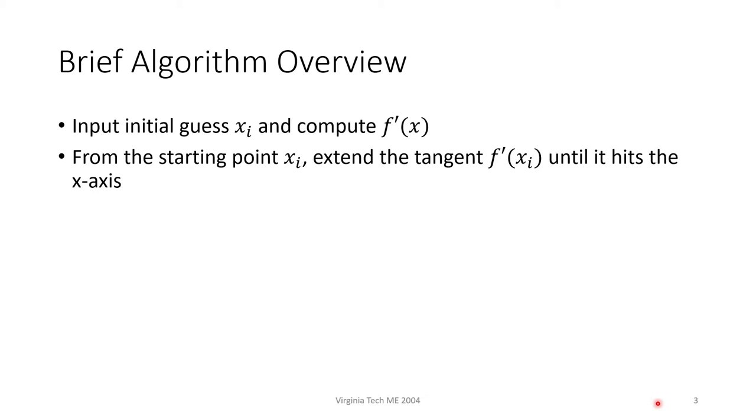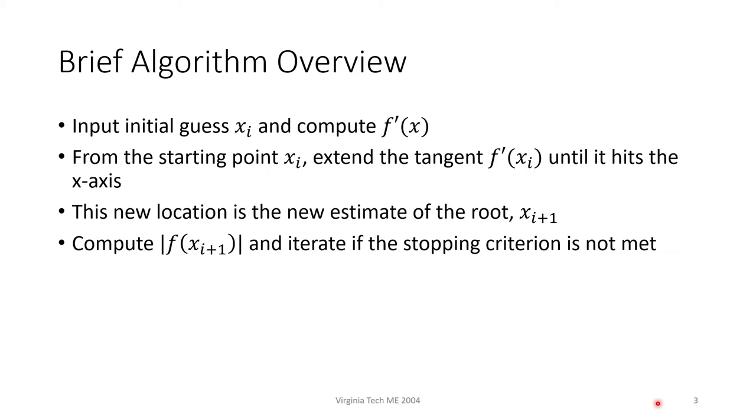Starting from the initial guess, we trace the derivative down to the x-axis. Then, we sample the function at that point to obtain our root estimate. We repeat this process until we capture the root within our specified stopping criterion or tolerance.